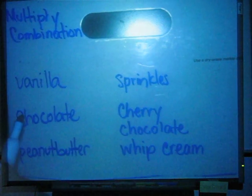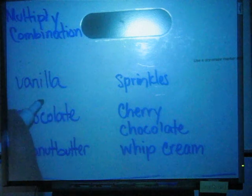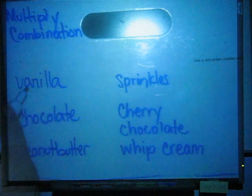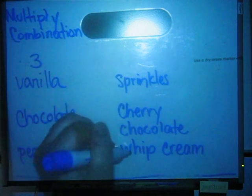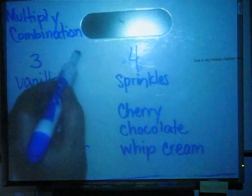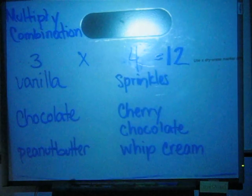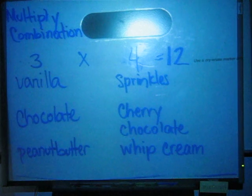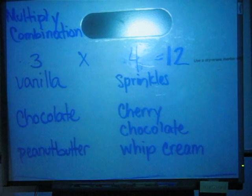Now I can either draw my lines, which would take a little while, or I can automatically know I'm trying to see how many ways I can put my ice cream together. How many types of ice cream do I have? 3. How many toppings do I have? 4. So the easiest way is to do 3 times 4 equals 12. There are 12 different ways I can put my ice cream together. Drawing the lines can get confusing and we can get lost in where our lines are, so you have to take your time. Good luck on your combinations.